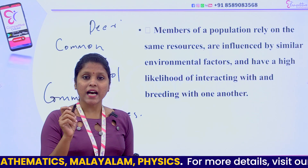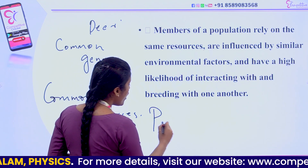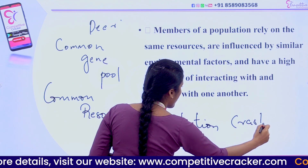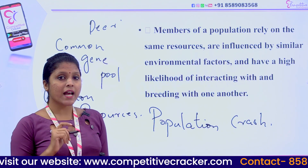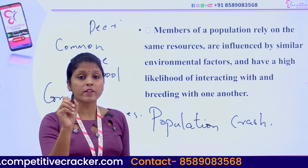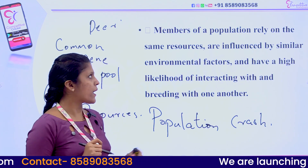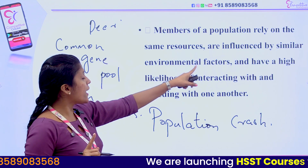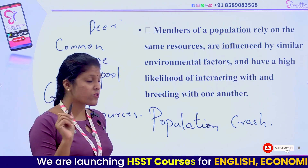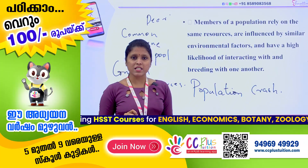When organisms are depleted from an area, we call it a population crash. A population crash occurs due to over-exploitation of the same resources, which increases competition and reduces population size. Members of a population rely on the same resources, are influenced by similar environmental factors, and have a high likelihood of interacting with and breeding with one another.